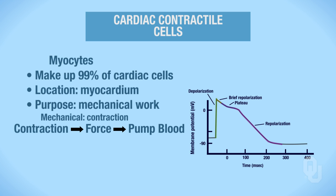In order to do that, they have to create what is called the cardiac action potential, and that is what you see in this graph. We will discuss the phases of the cardiac action potential in a separate video. For now, realize that the cardiac contractile cell's purpose in life is to contract, which generates the force to pump the blood, and in order to do that, they have to generate these cardiac action potentials.